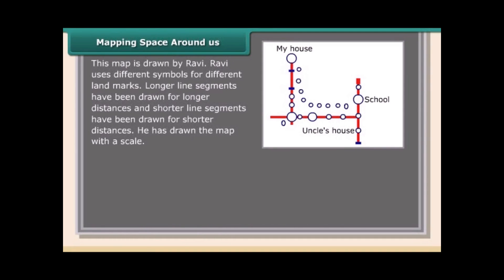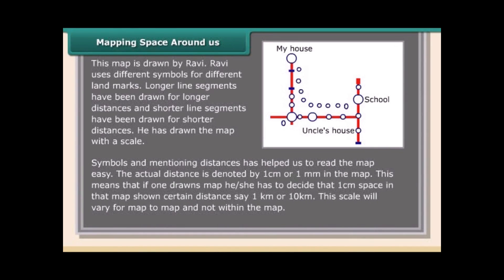This map is drawn by Ravi. Ravi uses different symbols for different landmarks. Longer line segments have been drawn for longer distances and shorter line segments for shorter distances — he has drawn the map with a scale. Symbols and mentioning distances helps us read the map easily. The actual distance is denoted by one centimeter or one millimeter in the map, so the map maker decides that one centimeter represents a certain distance, such as one kilometer or ten kilometers. This scale will vary from map to map but not within the map.